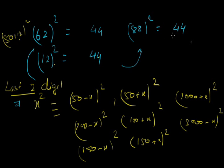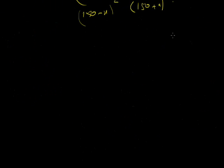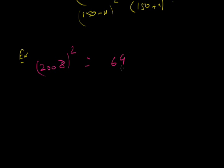For example, 2008 squared: 2008 = 2000 + 8, so last two digits equal those of 8², which is 64. For 33 squared: 33 = 50 − 17, so last two digits equal those of 17², which is 289, giving last two digits 89.